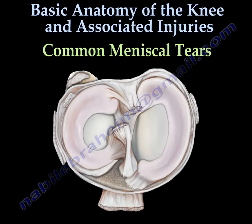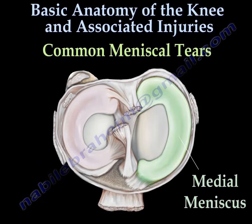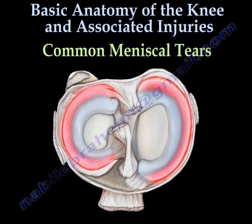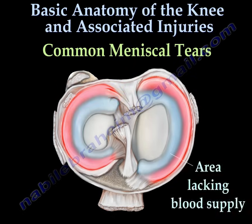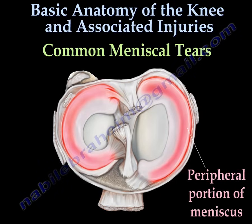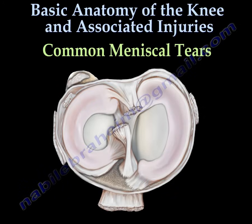A meniscal tear is a common knee injury that can cause pain within the knee joint. Each knee has two C-shaped menisci: the medial meniscus and the lateral meniscus. This tissue functions as a cushion for the articular cartilage. The majority of the meniscus lacks a blood supply, and for this reason some areas of the meniscus are unable to undergo a normal healing process. The peripheral area is the portion of the meniscus that does have a blood supply; if damage occurs within this area, it is possible to repair the torn meniscus.